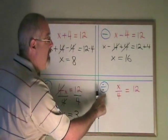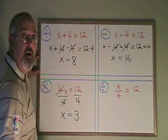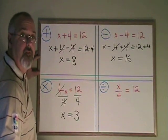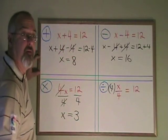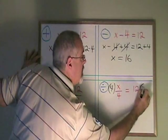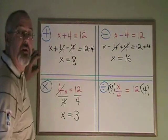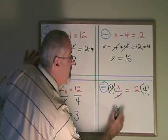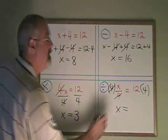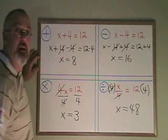Here I have division. My x is being divided by a 4, and the opposite of division is multiplication. So I'm going to multiply the left side of the equation by a 4, which means I have to multiply the right side of the equation by a 4 as well. These cancel. My x is alone, and 12 times 4 is 48. I have my answer.